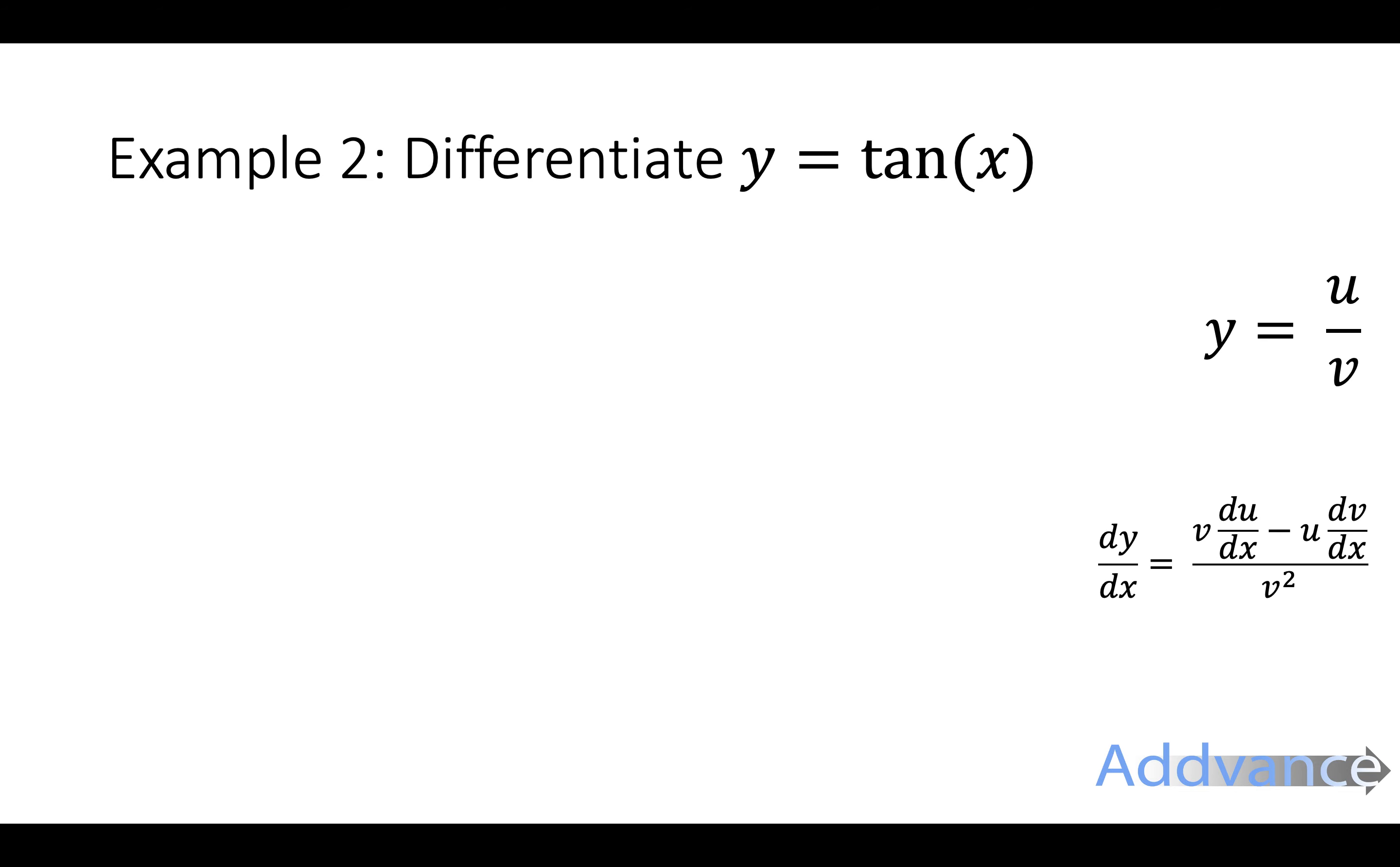Continuing now we're going to do example two. I'm going to do y equals tan of x. I'm going to differentiate this. Now what you need to remember is that y equals tan of x is the same as sine of x over cos of x. This is a basic rule of trigonometry. If you don't remember this then it will be in your textbook.